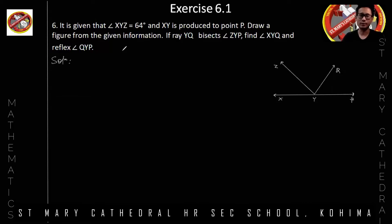The question states that angle XYZ is equal to 64 degrees. And ray YQ bisects angle ZYP. You can see YQ is an arm, isn't it, which bisects angle ZYP. So that means angle ZYQ is equal to angle QYP, since YQ bisects angle ZYP.